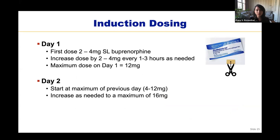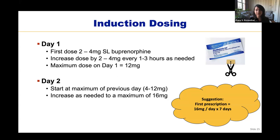When inducing buprenorphine, the most standard strategy is to start low and titrate up until the patient finds a sufficient dose. On induction day, give a first dose of 2 to 4 mg sublingual buprenorphine — the easiest way is to cut an 8 mg strip into a quarter or half. Increase by 2 to 4 mg every 1 to 3 hours as needed, with a maximum dose of 12 mg on day one. On day two, start at the maximum dose from the previous day and increase by 2 to 4 mg as needed up to a maximum of 16 mg. When doing this as an outpatient, it's often easiest to send a first prescription for 16 mg per day for 7 days so they don't run out.